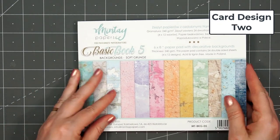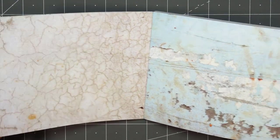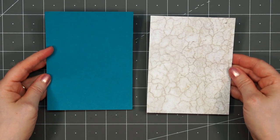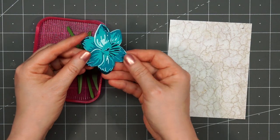For card design number two, I'm using some pattern paper from Minty Papers. This is their Soft Grunge background. I decided to use this paper that looks like a cracked concrete wall. That was really pretty. I will be layering that on some teal cardstock.